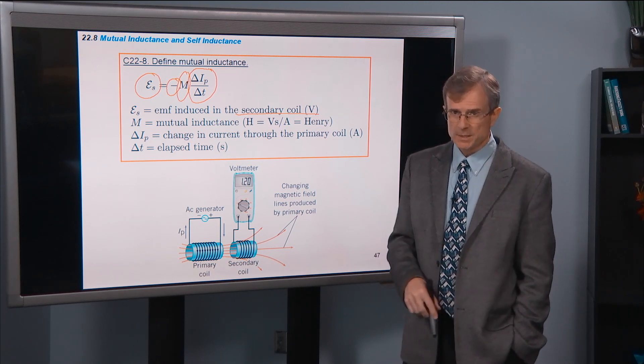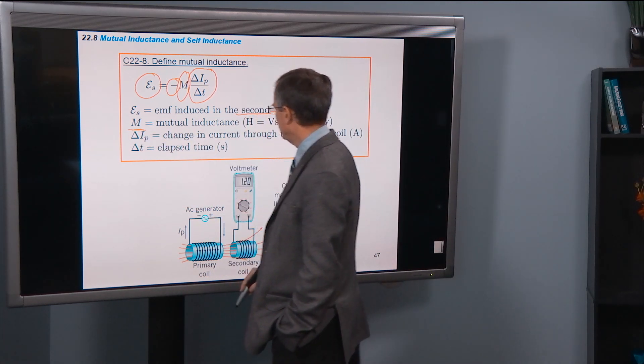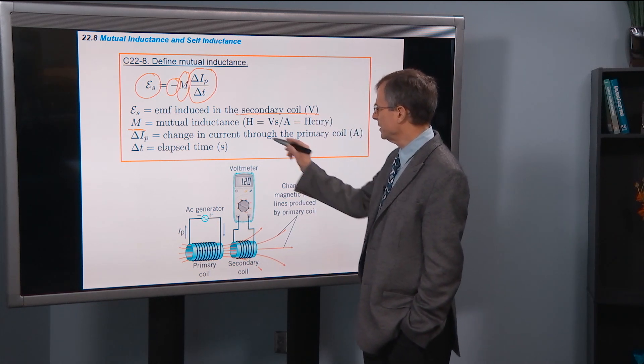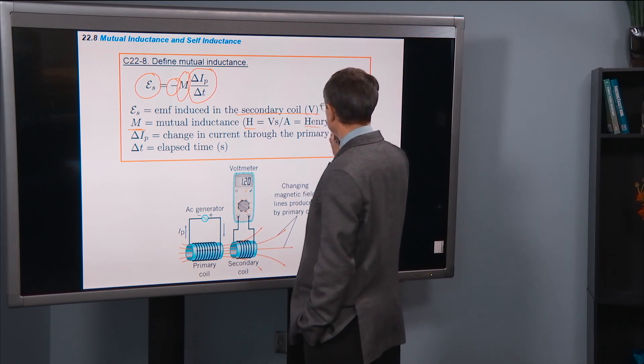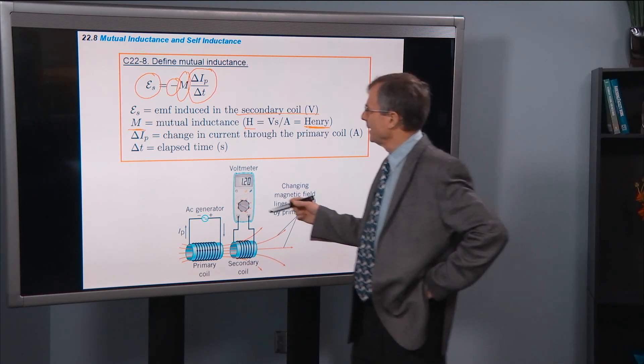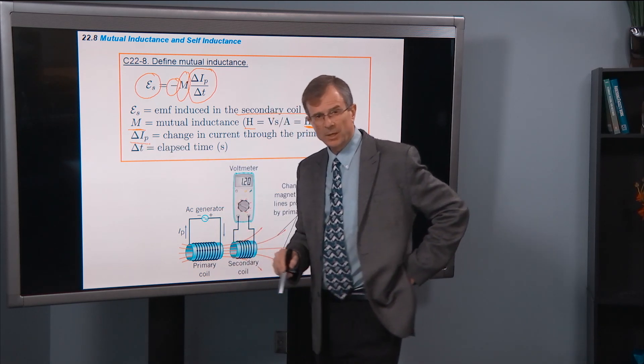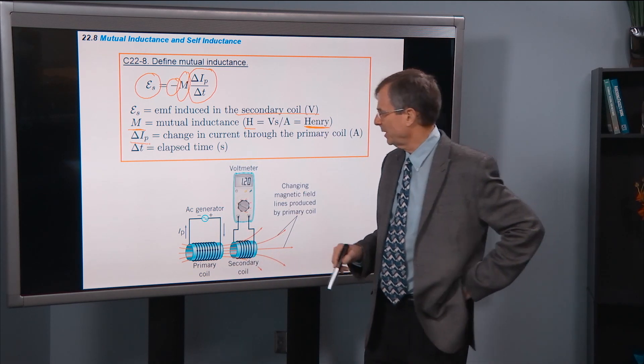But it's not quite the same. N is replaced by something called the mutual inductance. It's measured in henrys. It's a volt second per amp. How do I know that? Because we're talking about a change in current instead of a change in magnetic flux.